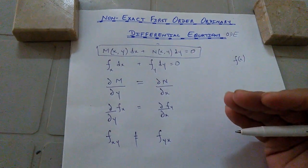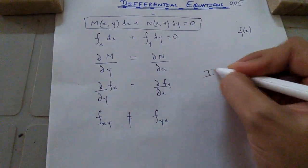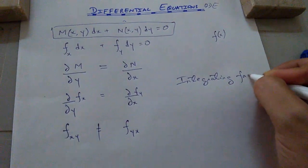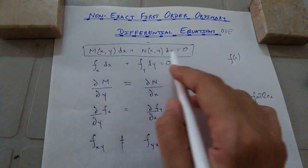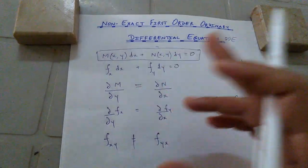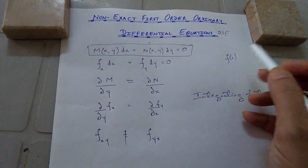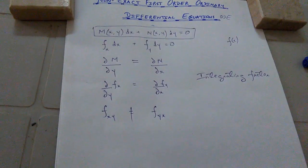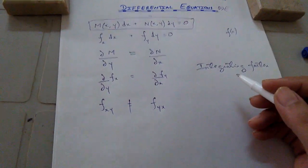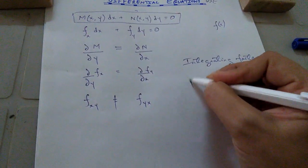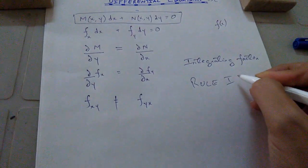So we have to convert the non-exact equation into an exact form. For that purpose, we introduce an integrating factor. Once we multiply this integrating factor throughout the equation, the equation will be turned into an exact form, and then we can evaluate it and find the solution. There are basically four rules for finding the integrating factor, depending on the nature of the non-exact ODE.